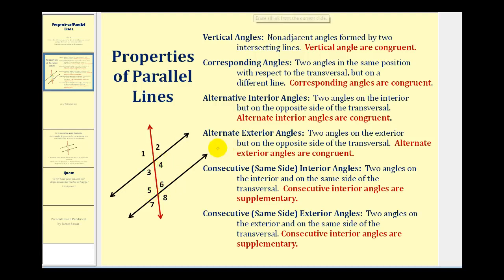Next, we have the alternate exterior angles — two angles on the exterior, but on the opposite side of the transversal. So angle one and angle eight are alternate exterior angles, which are congruent, as well as angle two and angle seven.